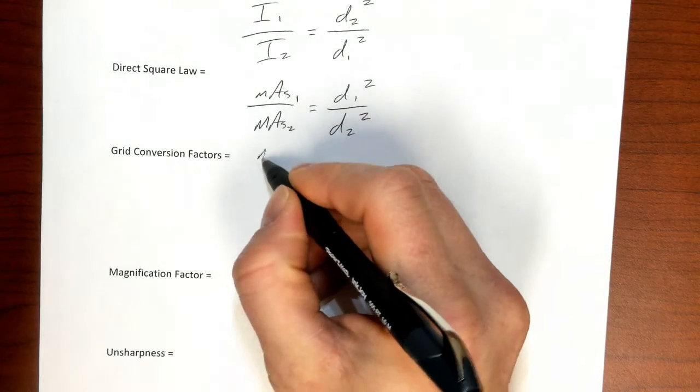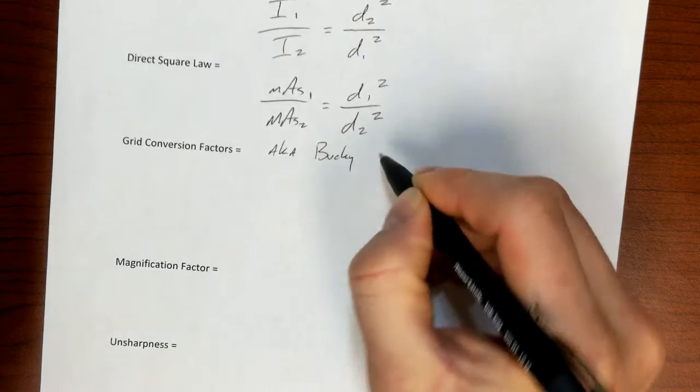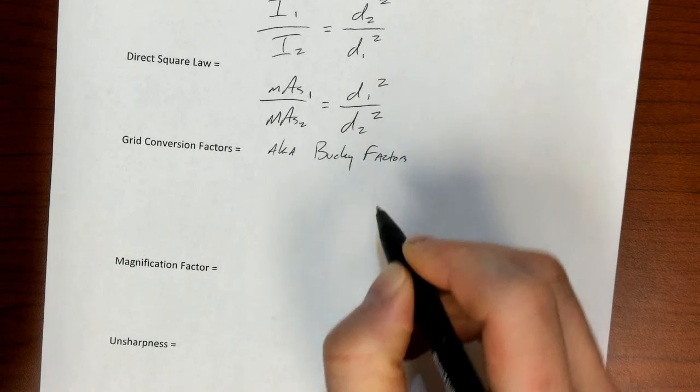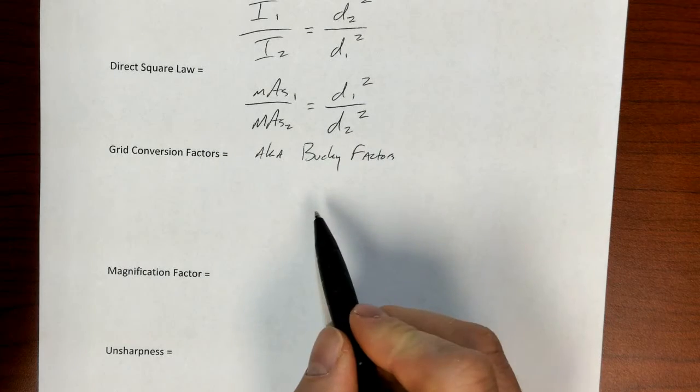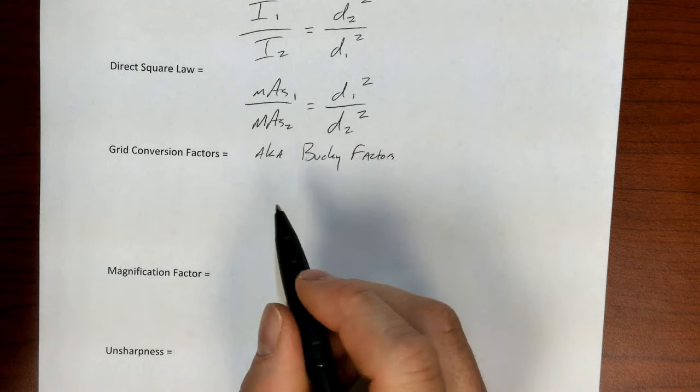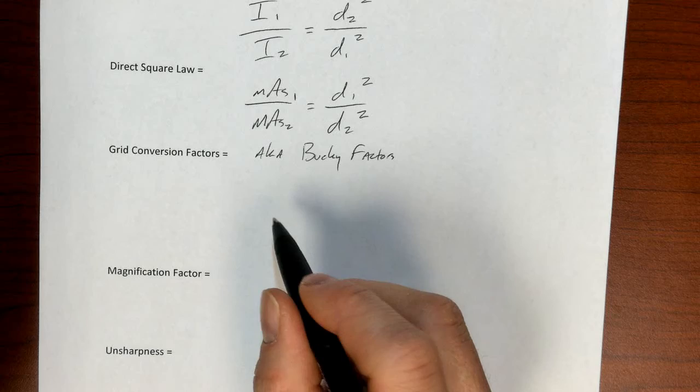Okay, grid conversion factors are sometimes also called Bucky factors. And these are factors. They're dimensionless things. So they're a way of guiding changes in technique if we use a grid.